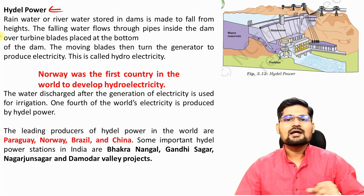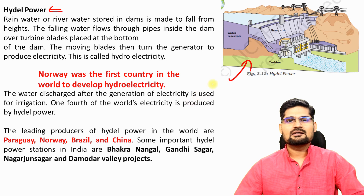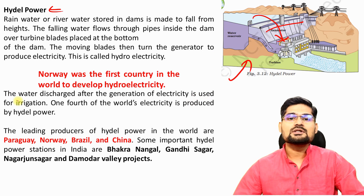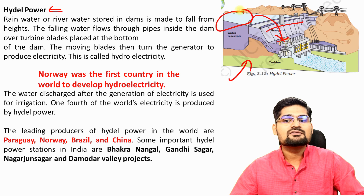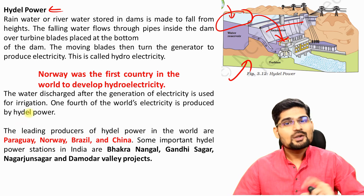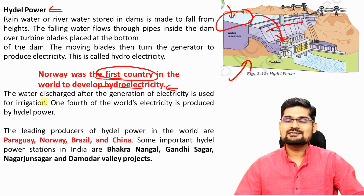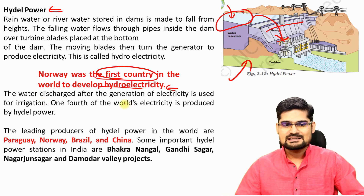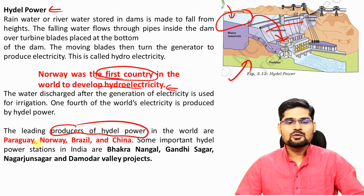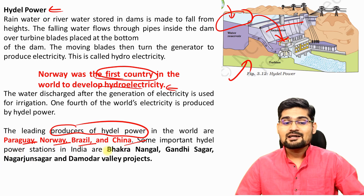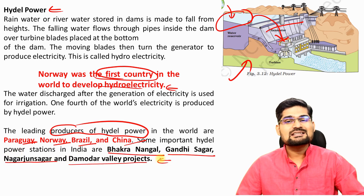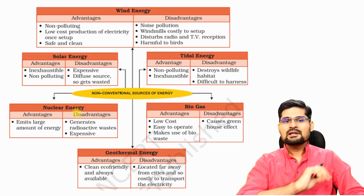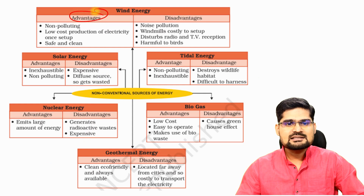Hydropower resources involve the creation of a dam to produce hydroelectric power, making it one of the most common renewable energy resources across the world. Norway was the first country to develop hydroelectricity. Leading producers of hydropower in the world are Paraguay, Norway, Brazil, and China. In India, notable projects include the Bhakra Nangal Project, Nagarjuna Sagar, and the Damodar Valley Corporation projects.